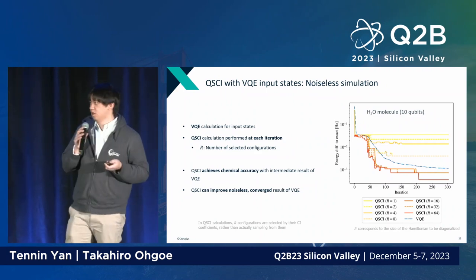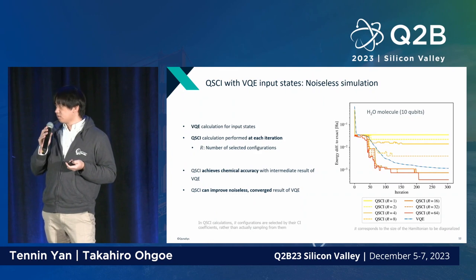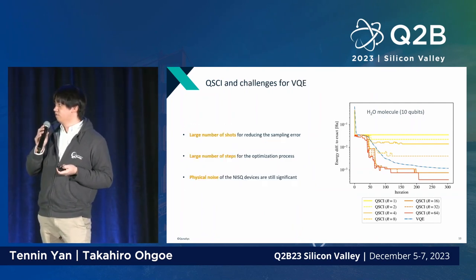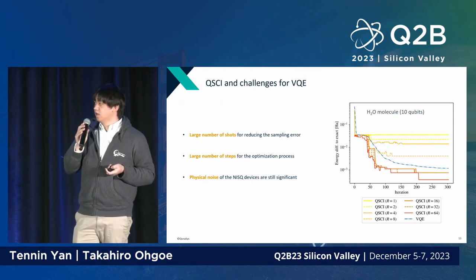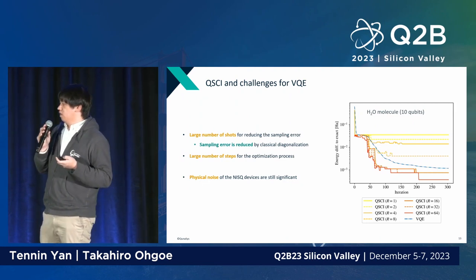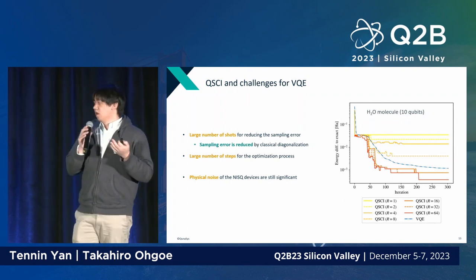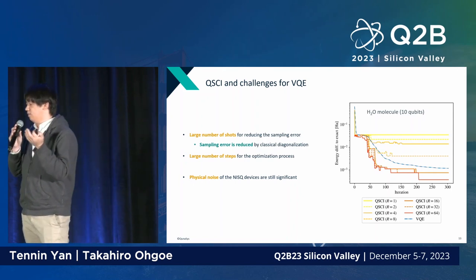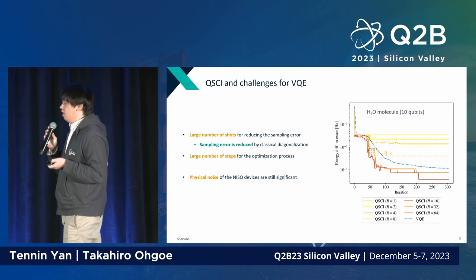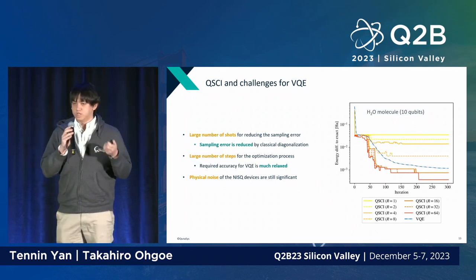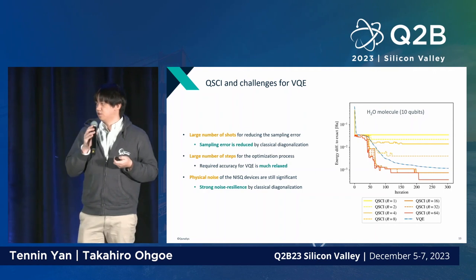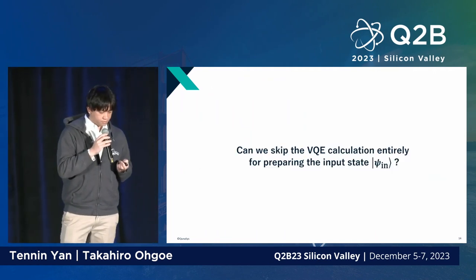Our algorithm still uses VQE as input, but we plan to address that. With QSCI, we reduce the sampling error by classical diagonalization. We sample from the quantum computer not to directly get chemical accuracy, but to get reasonable configuration interactions. We don't need iterative optimization — we do just one-step sampling — and by doing only classical diagonalization, we can dramatically reduce the noise.